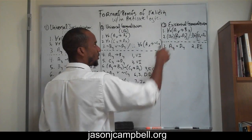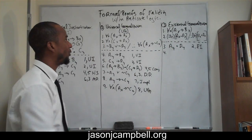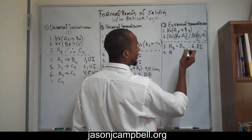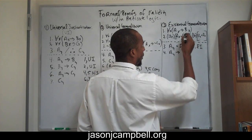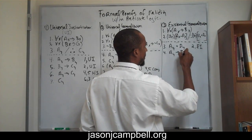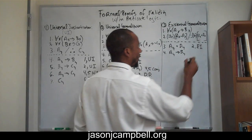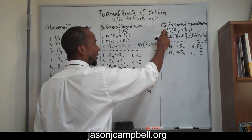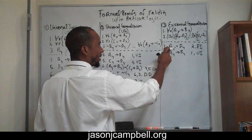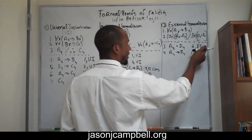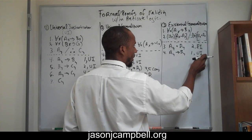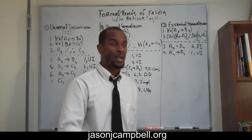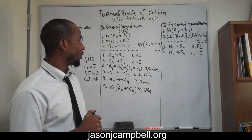Now we can instantiate our universal claim, like we've been doing before. So our universal claim is going to be: if y is an A, then y is a B — on line four, universal instantiation on line one. We've instantiated the existential claim before the universal claim, following the rule that you must instantiate existential before universal.